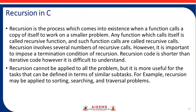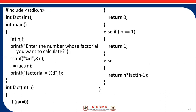Recursion in C: Recursion is the process which comes into existence when a function calls a copy of itself to work on a smaller problem. Recursion cannot be applied to all problems, but it is useful for tasks that can be defined in terms of similar sub-tasks — for example, sorting, searching, and traversal problems. This is the example.